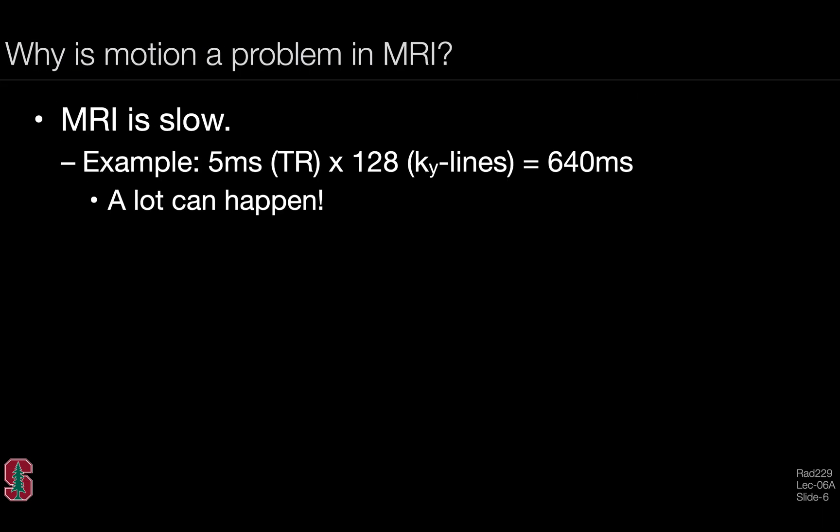Why is motion a problem in MRI? The most basic reason is that MRI is comparatively slow in terms of its image acquisition relative to the speed of the physiologic motion events.